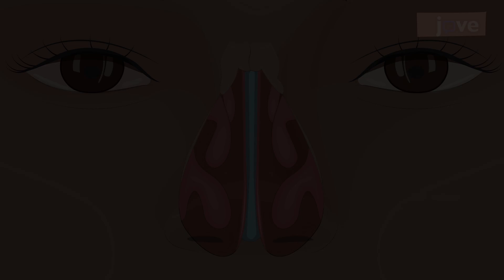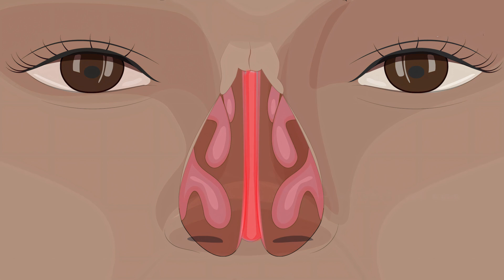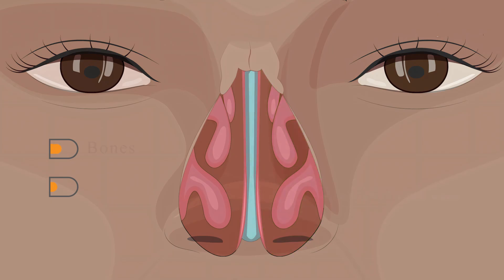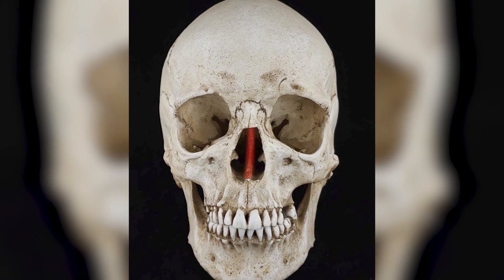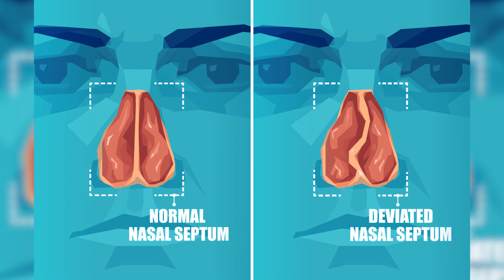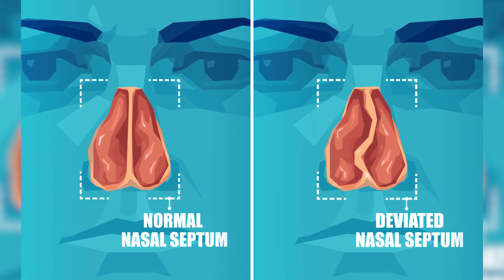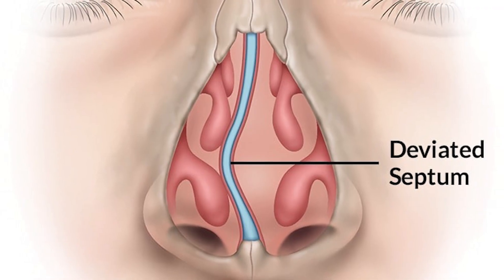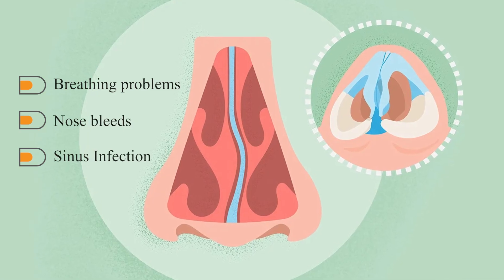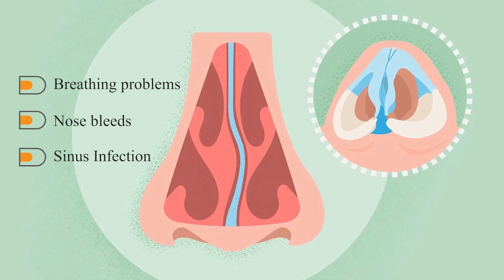The nasal septum is the thin vertical wall that separates the left and right nasal cavities. It is made of both bone and cartilage — the front part is cartilage, which is soft and flexible, while the back part is made of bone and provides structural support. A properly positioned septum ensures that both sides of the nose receive equal airflow. However, in many people the septum may be slightly off-center — a condition known as a deviated septum — which can lead to breathing problems, frequent nosebleeds, or sinus infections if severe.